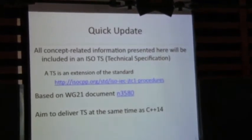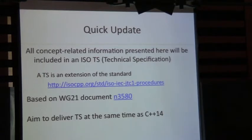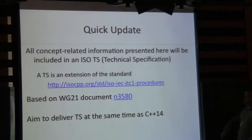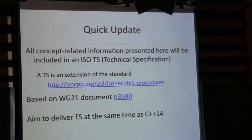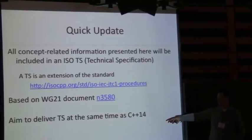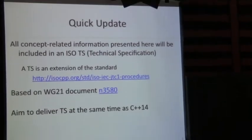A technical specification is an extension of C++, either the library or the language. This one happens to be a language extension — it's not actually part of C++ until later on. It's based on document N3580, which was the actual proposal for Concepts Lite presented at Bristol. We're hoping to deliver this technical specification around the same time as C++14, and hopefully compilers will be shipping these features at the same time they start shipping C++14 features. GCC should.